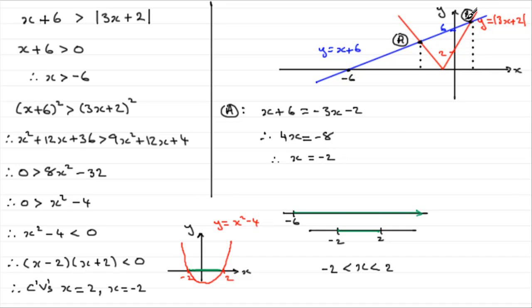Now, for this point here B, we'll put minus 2 in here, by the way. For this point B, what we need to do now is just solve simultaneously x plus 6, equaling this positive branch of y equals mod of 3x plus 2. So it will be 3x plus 2.